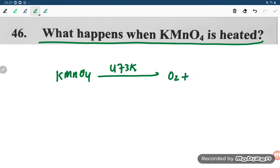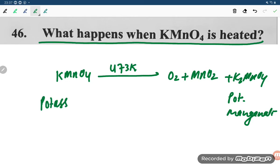It will give MnO2 and K2MnO4, that is potassium manganate. This is potassium manganate, and the original compound is potassium permanganate.